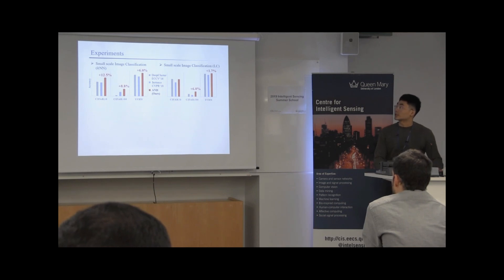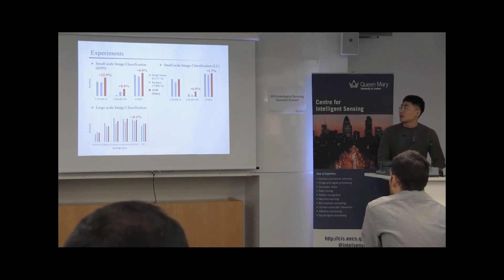So in the experiments part, we firstly evaluated our models on three widely adopted small-scale image classification datasets by both linear and non-linear classifiers. And it turns out that our model is able to get up to 12.5% margin over other state-of-the-art approaches. And then we moved on to the large-scale image classification task. However, this time, the advantage of our model is much weaker, and we blame this to the fact that...